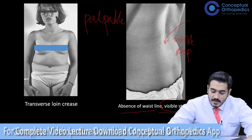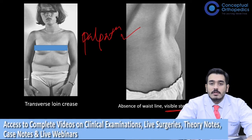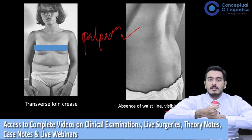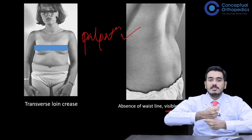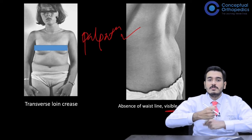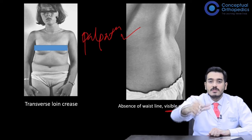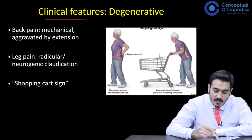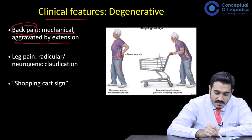In low-grade cases the step may not be visible but can still be detected on palpation. Clinically you have to feel carefully by passing your thumb through the spinous processes. This is basically the slip of one vertebra over another — one vertebra comes forward compared to the other. When this happens the spinous process alignment changes, and passing your thumb along the spine you can feel that one spinous process has moved relative to the other, causing this step. The clinical features may include back pain which is mechanical and classically aggravated on extension.